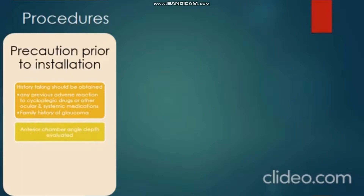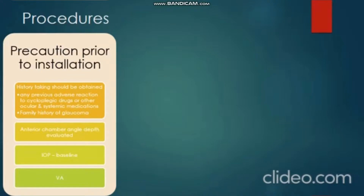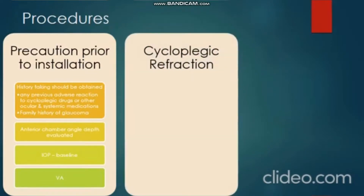The anterior chamber angle depth should be evaluated — you can use the Von Herrick grading technique for slit-lamp examination. IOP should always be measured. You should take visual acuity prior to installation of the cycloplegic agent, because after instilling the cycloplegic agent accommodation will be stopped and you won't get a proper visual acuity measurement. Punctal occlusion should also be applied.